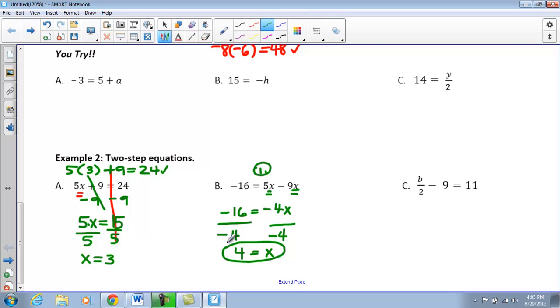Why don't you guys go ahead and plug this into your calculator, and you can go ahead and check there. So wherever you see x, you're going to plug that solution. So negative 16 equals 5 times 4 minus 9 times 4, and this does in fact check.